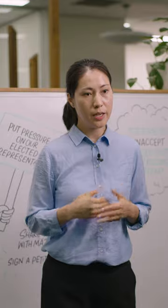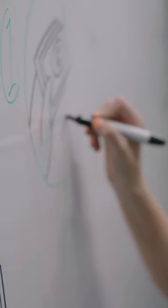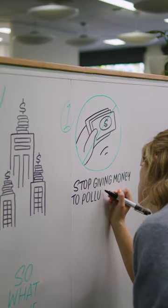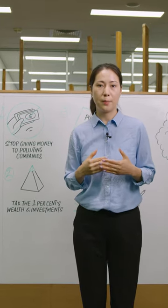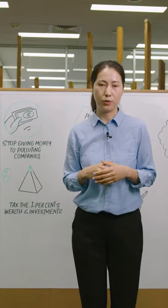So what do we do? Firstly, Australia, along with other world governments, needs to stop giving money to polluting companies. Secondly, we need to tax the 1% wealth and investment in polluting companies.